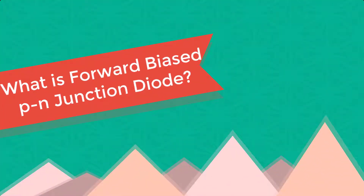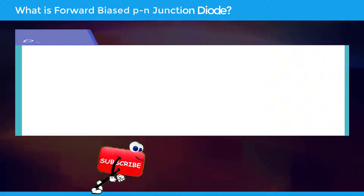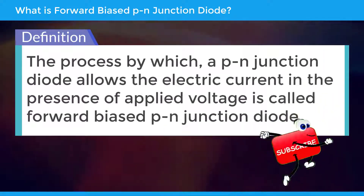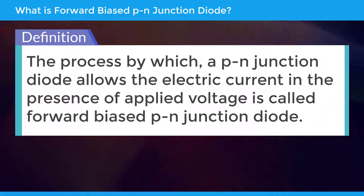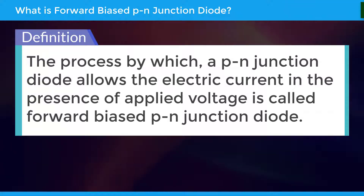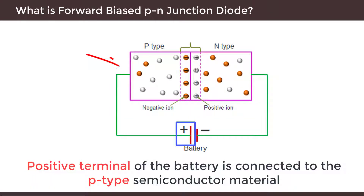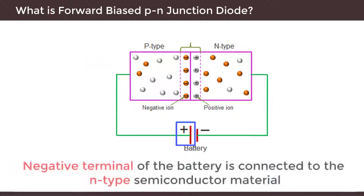What is forward biased PN junction diode? The process by which a PN junction diode allows the electric current in the presence of applied voltage is called forward biased PN junction diode. In forward biased PN junction diode, the positive terminal of the battery is connected to the P type semiconductor material and the negative terminal of the battery is connected to the N type semiconductor material.